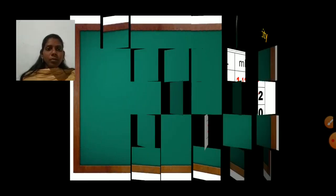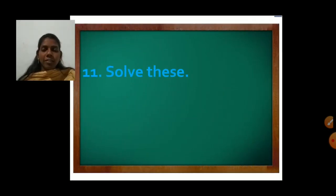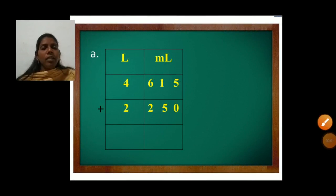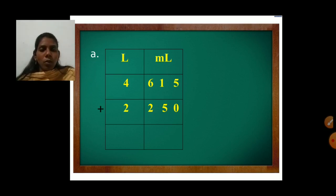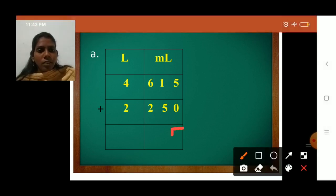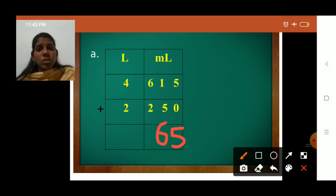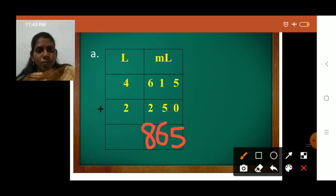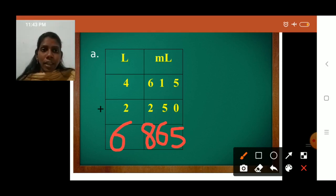Now solve question number 11 in your book. Look at A1 — we will add milliliters first and then liters. 5 plus 0 is 5, 5 plus 0 is 5, then 1 plus 5 is 6 and 6 plus 2 is 8 — so 865 milliliters. Then 4 plus 4 plus 2 is 6 liters. Answer: 6 liters and 865 milliliters.